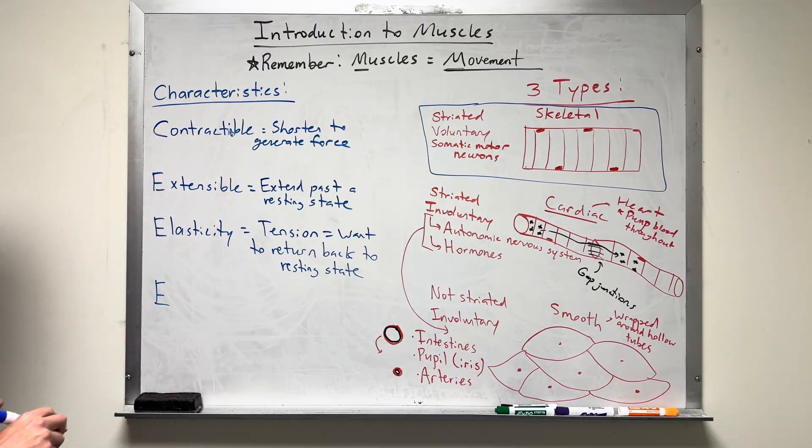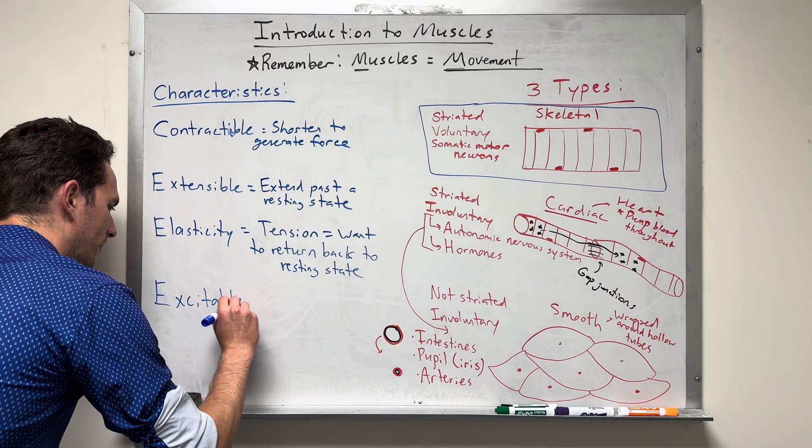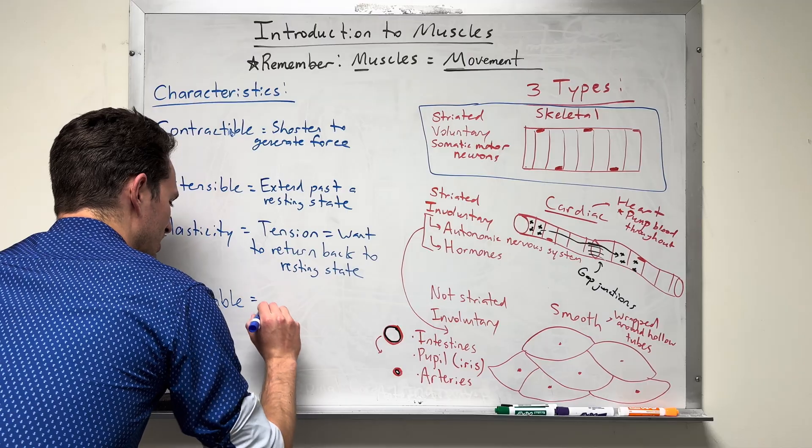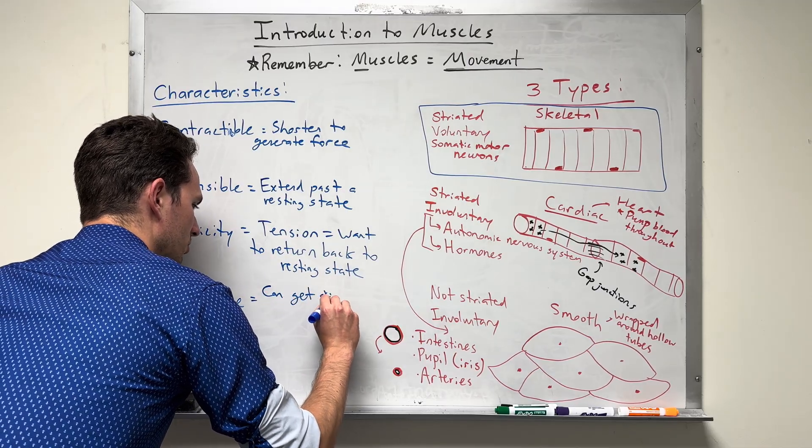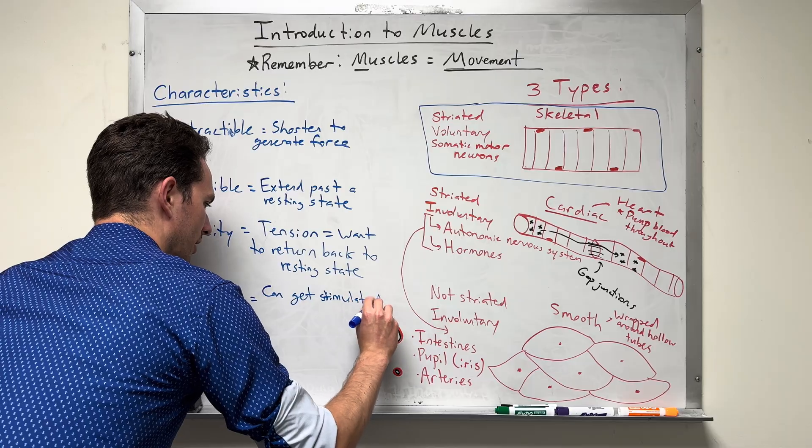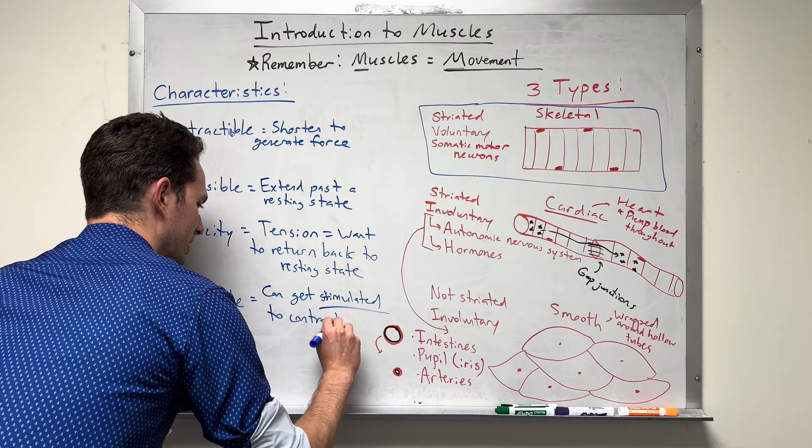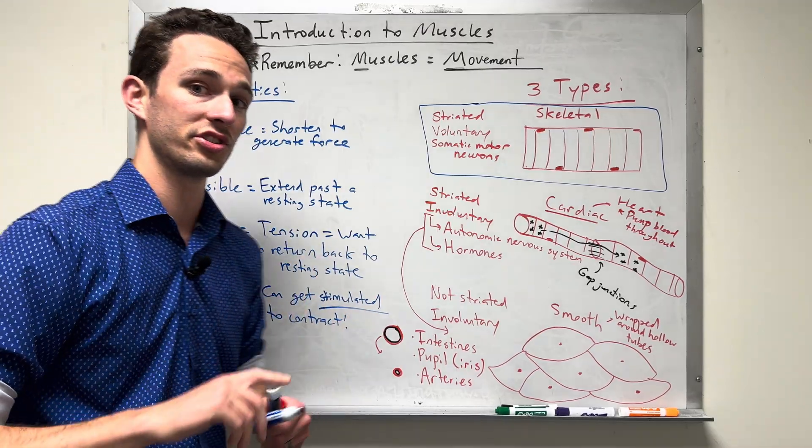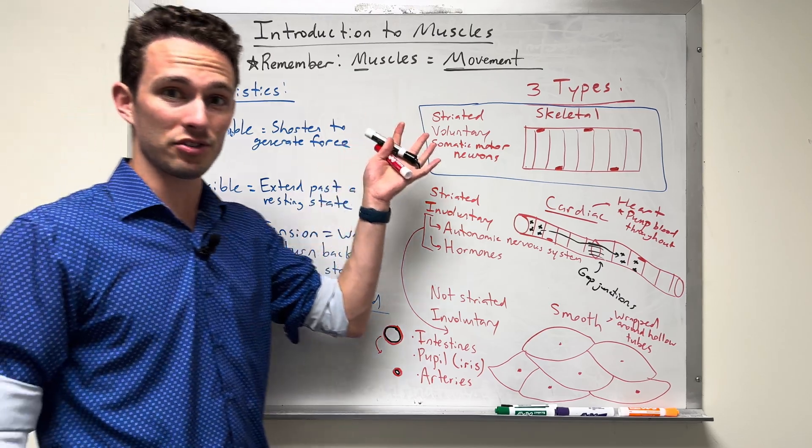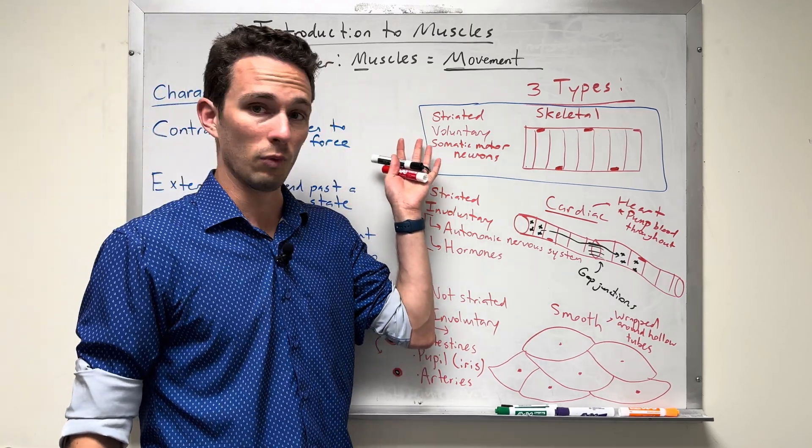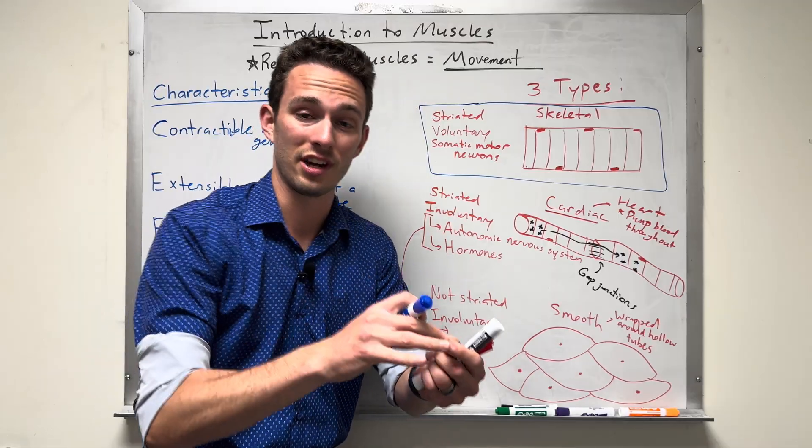The last one is usually the hardest one to think of yourself, and that is excitable. This basically means it can get stimulated to contract. Well, if it's able to get stimulated, it means it has to have a receptor for the stimulus. And so my question to you is, when do we want skeletal muscle to contract?